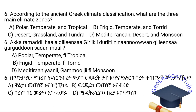Question number six: According to the ancient Greek climate classification, what are the three main climate zones? The answer choices are: A. Polar, Temperate, and Tropical. B. Frigid, Temperate, and Torrid.